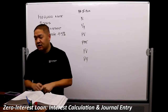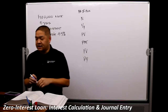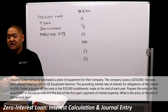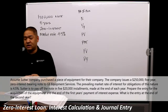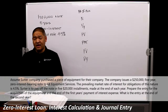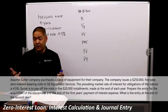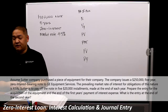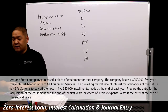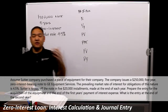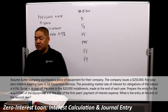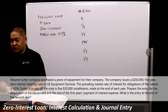Here's the example: Sutter Corporation purchased a piece of equipment. The company issues a $100,000 five-year zero-interest-bearing note to GE Equipment Services. The prevailing market rate of interest for obligations of this nature is 4.5%. Sutter is to pay off the note in five $20,000 installments — every single year they pay GE $20,000 — and these payments are made at the end of each year. We need to prepare journal entries for the acquisition and the end of the first and second year's interest expense.